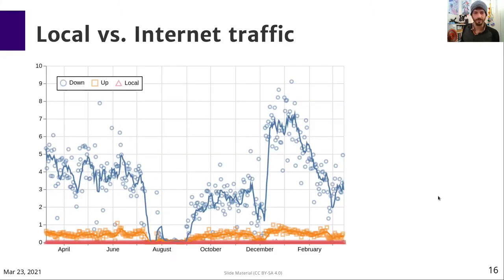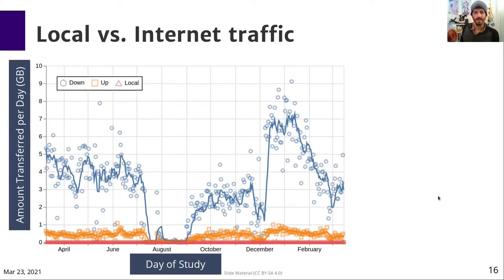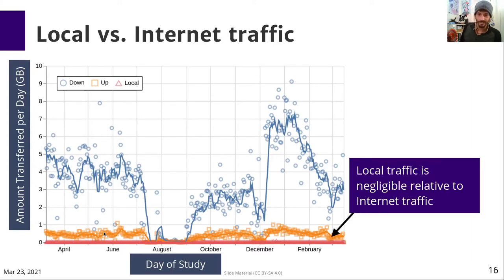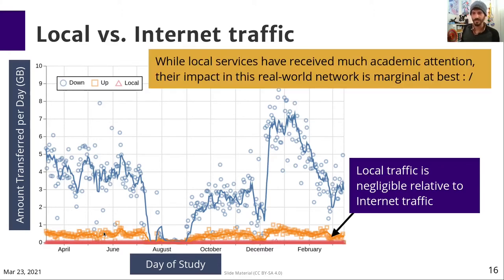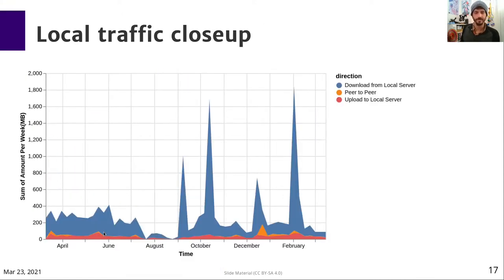Here are the key findings from this work. When looking at local versus internet traffic, this plot shows a timeline of the amount transferred per day in the network, split between the internet downlink in blue, the internet uplink in orange, and all local traffic in red. As you can see, the local traffic is negligible relative to the internet traffic. So even though there are zero-rated local services in the network — and local services have received a lot of academic attention in the past — their impact in this real-world network is marginal at best.